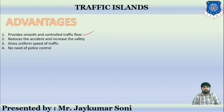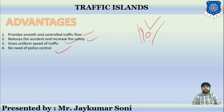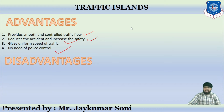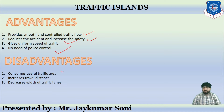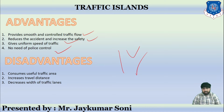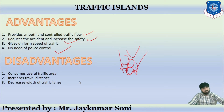Advantages include: it provides smooth and controlled flow of traffic, it reduces accidents, it increases safety, it gives uniform speed of traffic, and there is no need for police control because if a road has an island, people get diverted directly on their own. Disadvantages include: it consumes useful traffic area, it increases travel distance because people will have to travel more, and it decreases the width of the traffic lane because the original width is reduced by the space occupied by the island.